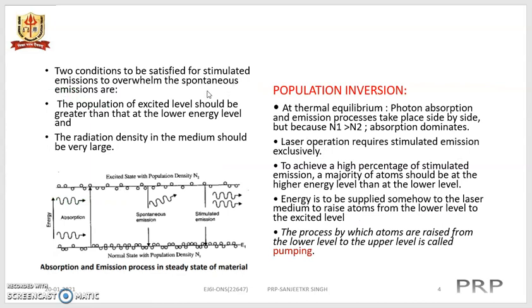Two conditions must be satisfied for stimulated emission to overcome spontaneous emission. First, the population of the excited level N2 should be greater than that at the lower energy level in the normal state. Second, the radiation density in the medium should be very large, so that it strikes another element and produces another photon.